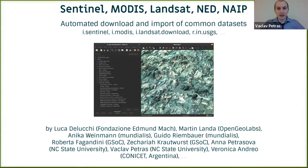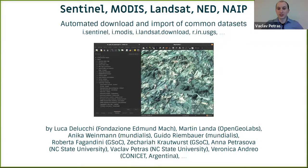There are also tools for automated download of different datasets — global or partial local datasets. I highlight Sentinel, MODIS Landscape, and NAIP Imagery. How it works is you download an extension from the GRASS GIS add-ons, and some of these tools require credentials to access government websites where you download the dataset. This is an easy way to get these data into GRASS GIS with just one run of a tool.